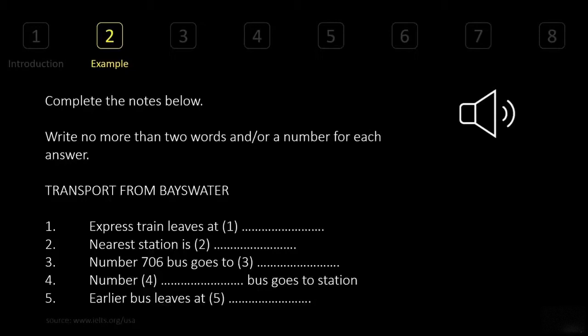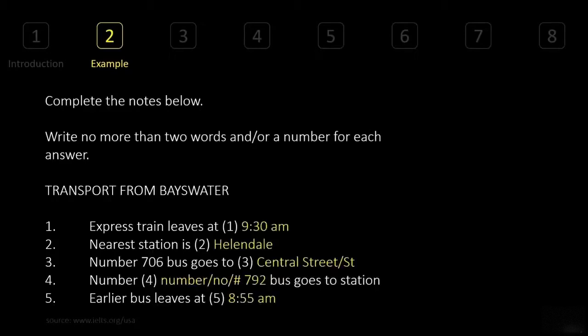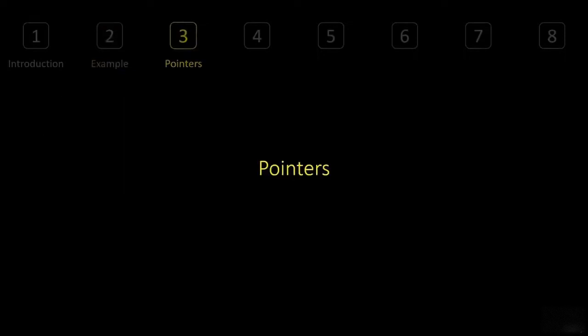And we are back. I hope you found all the answers correct, because we're going to look at them now. For question one it's 9:30 AM; question two, Helendale; question three, Central Street; question four, the hash symbol — pound sign — then 792, which is universally accepted; and question five, 8:55 AM. Remember, if there's a spelling mistake it is incorrect.